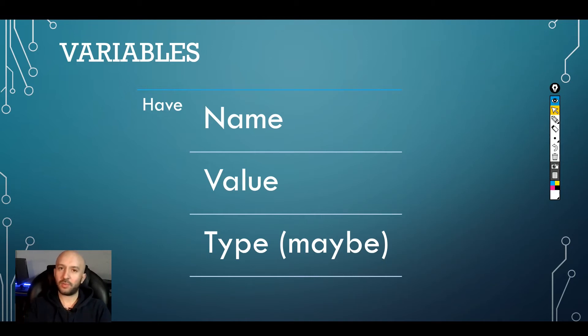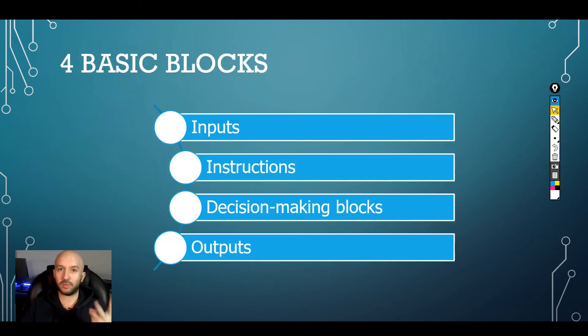Now that we have a good idea of what variables are, we can move on to the two missing blocks that we need to explain. Instructions and decision-making blocks. There are multiple things in programs that can go inside this category, but for now we are going to focus only in the top three, in my opinion, for a beginner.